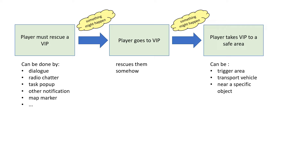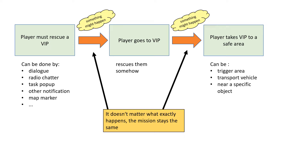Now you might think this isn't exactly helpful — I said that half the things don't matter and then just repeated what escorting a VIP is. So let's break it down. When I say that something doesn't matter, it's because from the perspective of the mission flow or the sequence of important events, such details are inconsequential. It really isn't important if I decide to have the player face 5, 6, 20 or no enemies. The mission will progress in the exact same way. Things like where exactly the VIP is, how many enemies there are, or whether the VIP ends up in a truck or helicopter — these don't change how the mission will be structured. And I can always change them later.